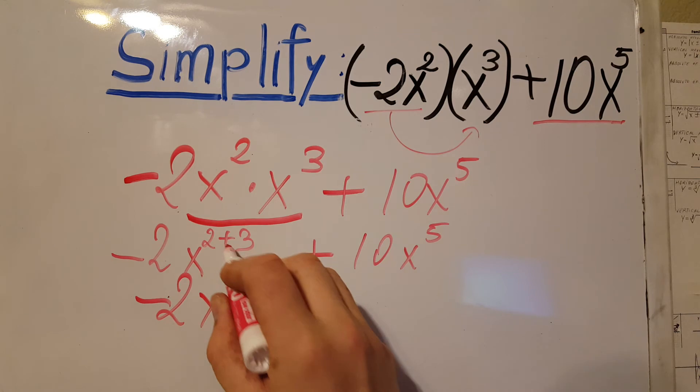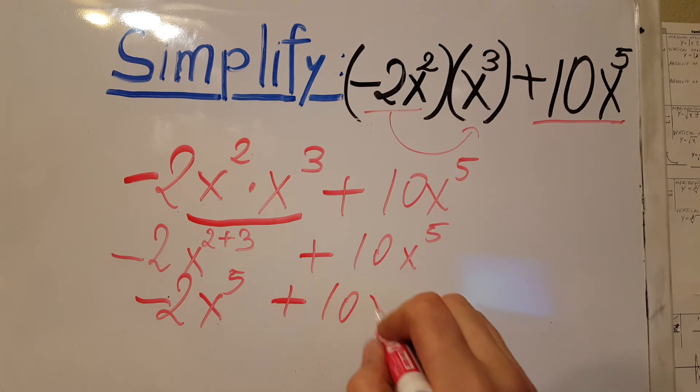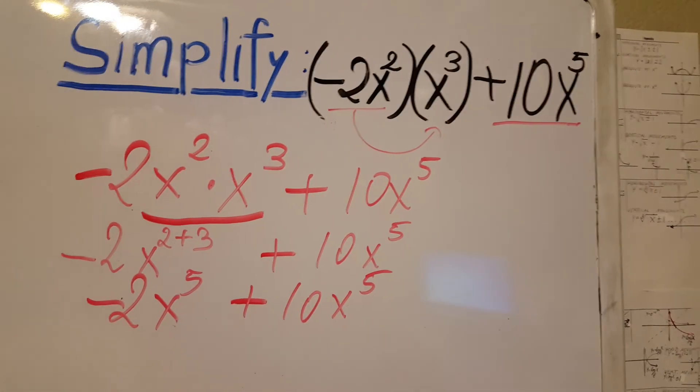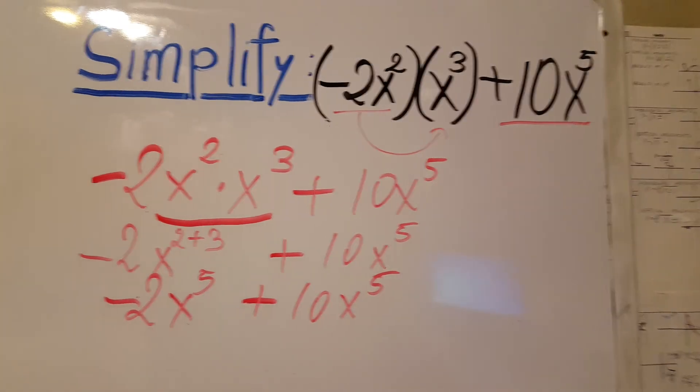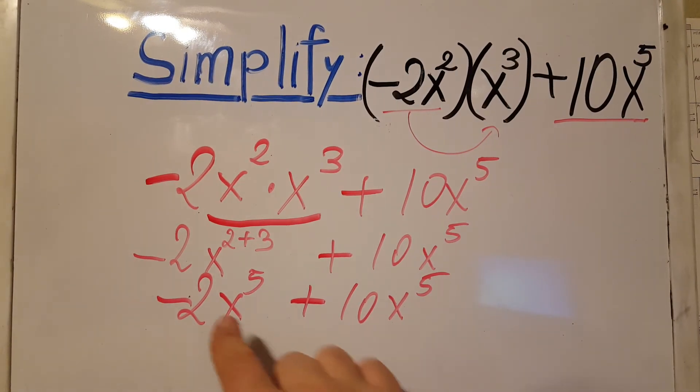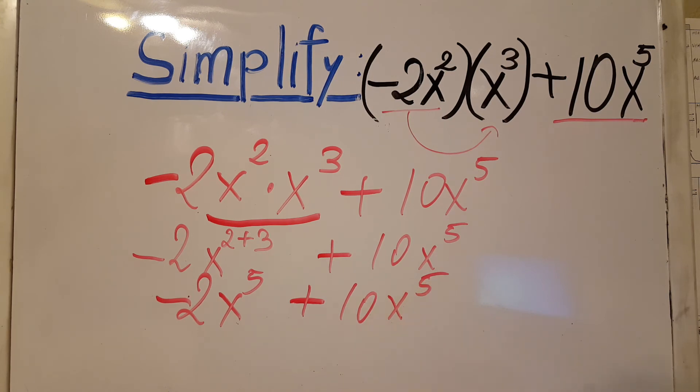Negative 2x to the 2 plus 3 is 5, so x to the fifth plus 10x to the 5. We still didn't do nothing with this one. And now we can see that we can combine like terms. We have an x to the 5 over here, we have an x to the 5 over here. We're gonna go ahead and combine these two.